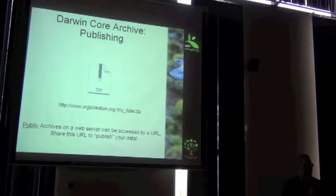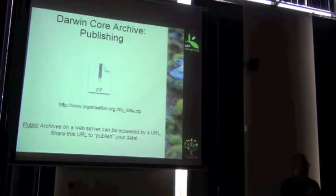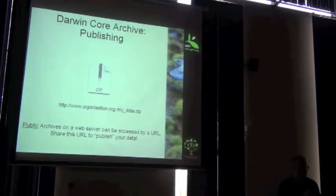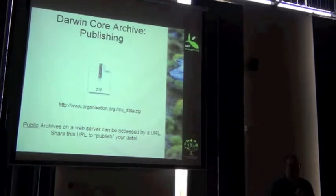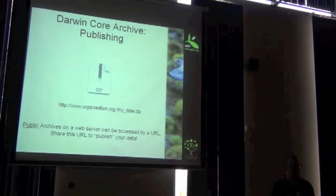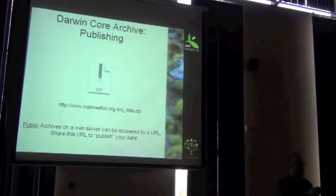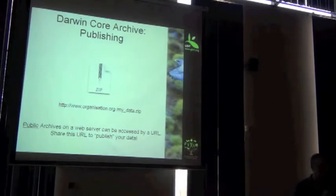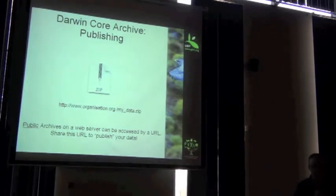Now you've got your Darwin Core Archive. It's got your data set, it's got your metadata about your data set, and it contains all the mapping information. Now how do you share that information? For example, how does GBIF come and crawl your data set and index it into the worldwide index?